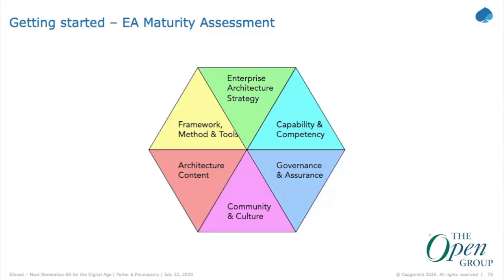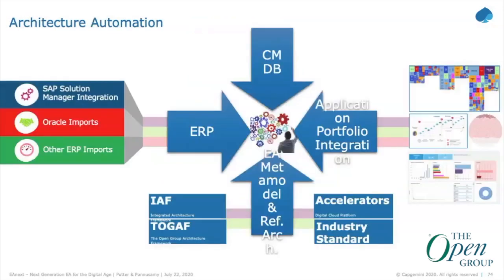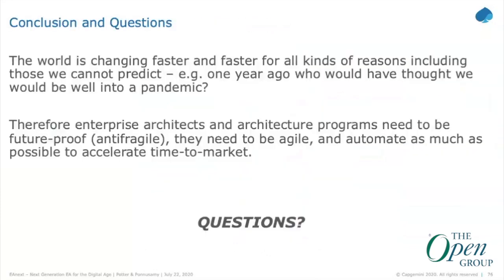One of the really interesting automations we're using with Orbis iServer is to automatically generate diagrams and enable people using Microsoft products to leverage those. The automation side was really important. Having that centralized repository is important especially for reuse — we have 8,000 certified architects around the globe, and being able to capture information and reuse artifacts, mixing and matching them, is a big deal.